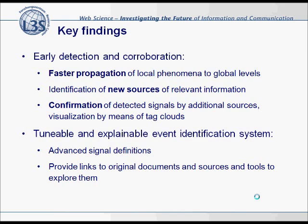With respect to the explainable event identification system, the system provides links to original documents. We aggregate information — for example, hundreds of Twitter messages — and the user initially sees only a signal reporting fever in Germany. The user then has the possibility to look at those documents and see whether the Twitter messages report about real fever, meaning people are actually sick, or whether they are reporting about football fever and are not really sick in a public health sense.